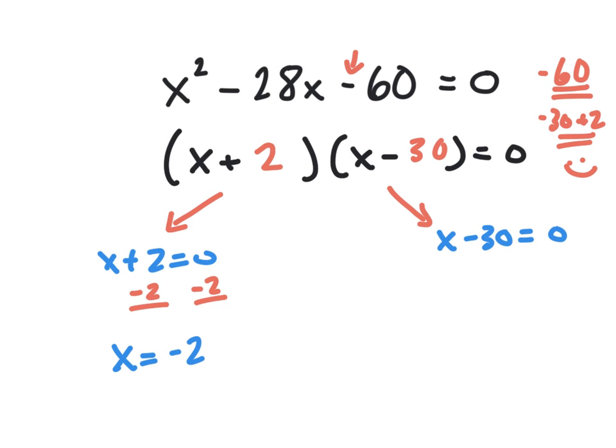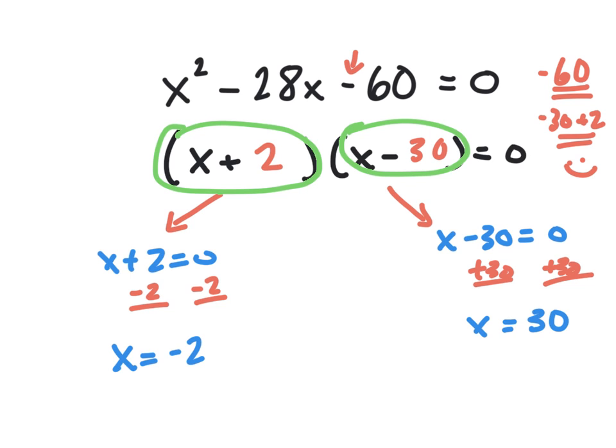And or x minus 30 equals zero. Right? Our idea is that one of these factors, either x plus 2 or x minus 30, has to be zero. If you multiply them together and the answer is zero, one of them has to be zero or both of them. And so we're going to solve this thing. We're going to add 30 to both sides. And we end up with this solution equaling 30.